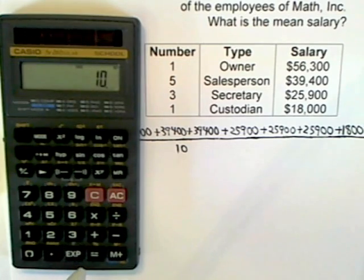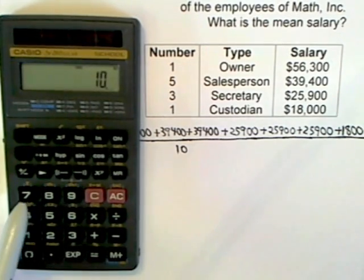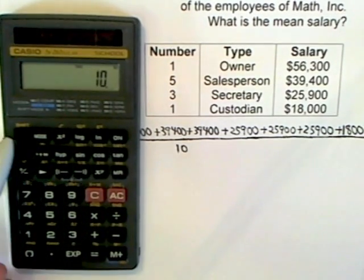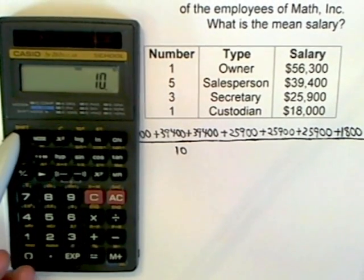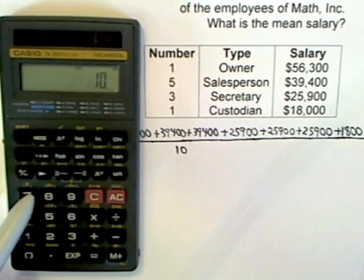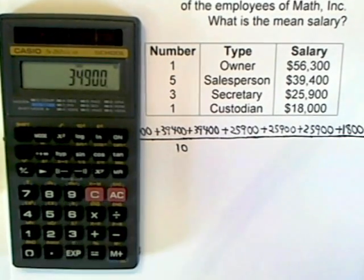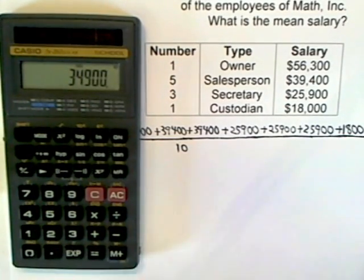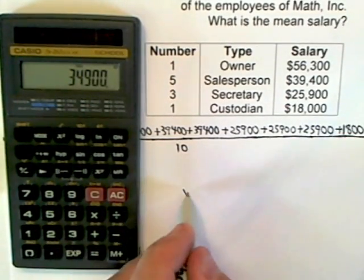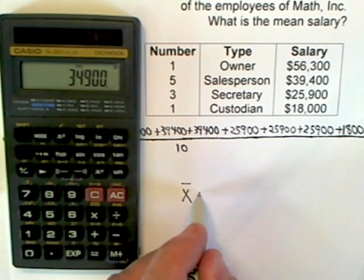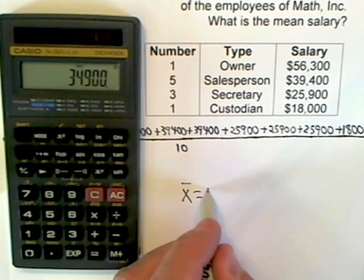Now that I've got the numbers in there and I know there are 10 of them, I can do X-bar. X-bar is the shift of the number 7 key, so I do Shift 7. And that tells me the mean salary is $34,900.